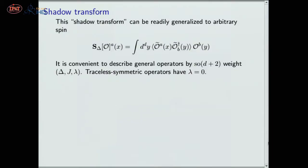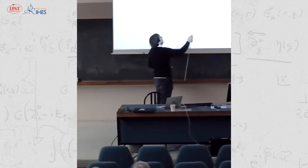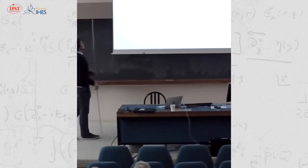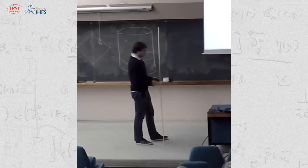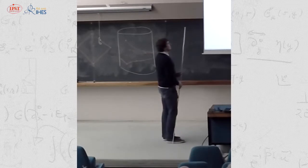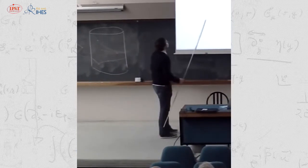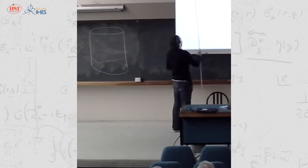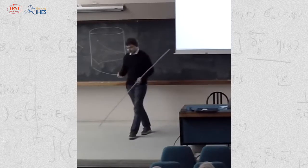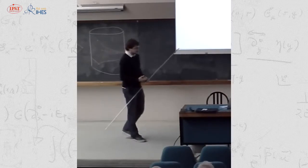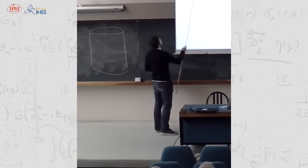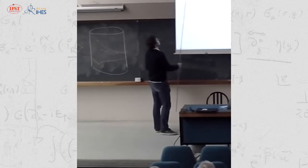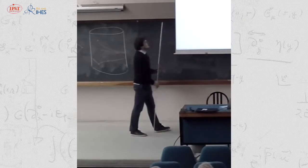We can straightforwardly generalize this to operators with spin by replacing the two-point function with the appropriate two-point function of operators with spin and contracting the indices. To describe the representations, we parameterize operators by scaling dimension Δ and some representation of the rotation group SO(d). The representation of the rotation group can be specified by a highest weight vector, which I split into two parts: a number j and a vector λ, where λ is a weight for SO(d-2). For traceless symmetric operators we will have λ equals zero.